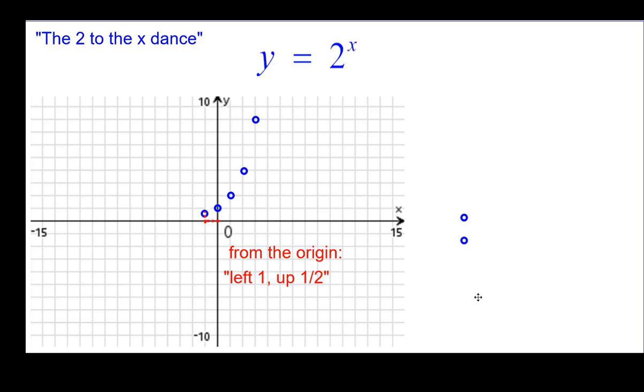If we go to the left 1, it's going to be up 1 half because 2 to the negative 1 is 1 over 2, which is 1 half. Left 2 up a quarter, 2 to the negative 2 is 1 fourth, 1 over 2 squared. And left 3 and up 1 eighth, 2 to the negative 3rd, 1 over 2 to the positive 3rd, which is 1 over 8.